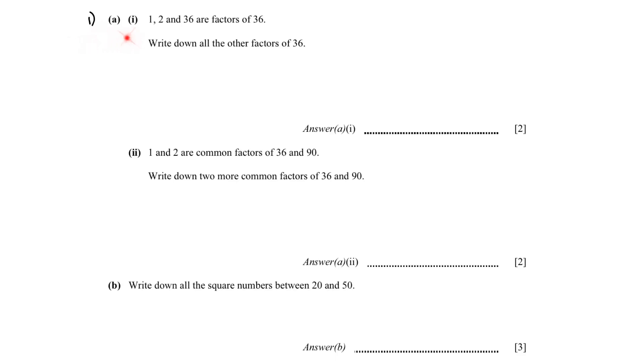Question number 1A1. 1, 2 and 36 are factors of 36. Write down all the other factors of 36. We know that 1 times 36 will give us 36, 2 times 18, 3 times 12, 4 times 9 and 6 times 6. So the other factors of 36 are 3, 4, 6, 9, 12 and 18.